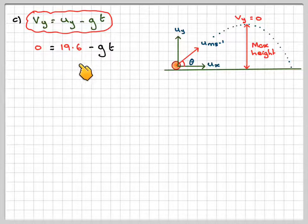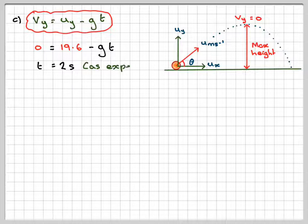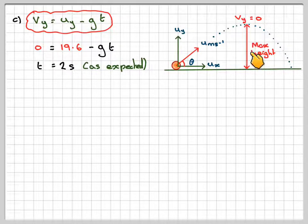We're going to have that zero is equal to 19.6 minus gt. Therefore t will be 19.6 divided by g, which is two seconds. And that's what we would expect it to be. So we probably don't need to actually show this part.